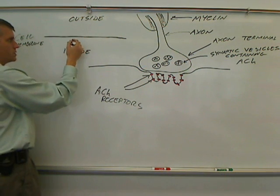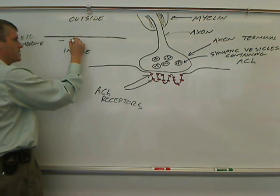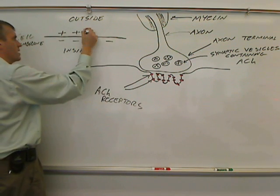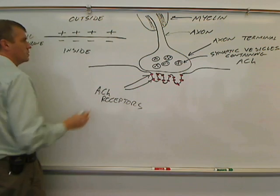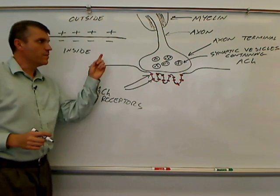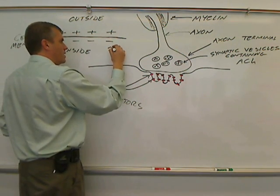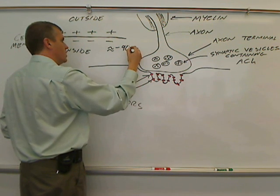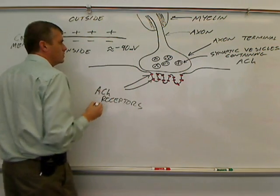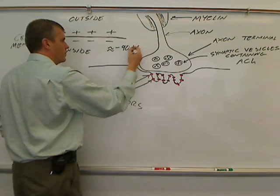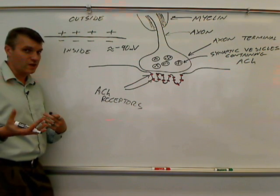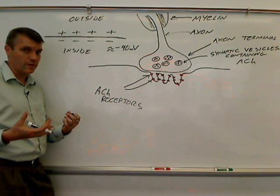There is a charge across this membrane. On the inside, it has a negative charge, and on the outside, it has a positive charge. We always measure from the inside, and the inside charge is around negative 90 millivolts. And that's set up by ions, and we'll talk about how that's set up when we talk about the nervous system.